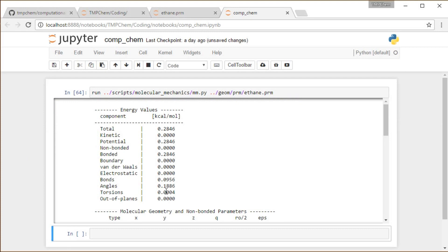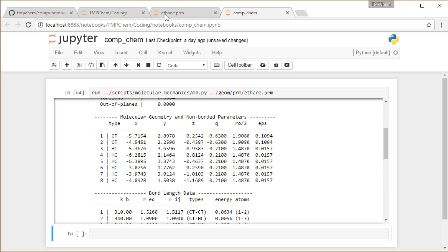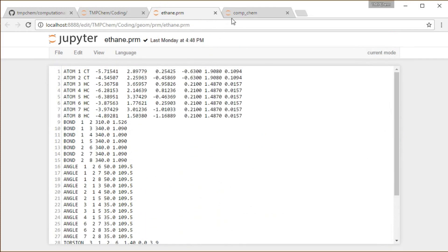Notice that my torsions are almost nothing because this ethane molecule is almost perfectly staggered, so it reads in that type of atomic coordinate data that I told it in the parameter file.